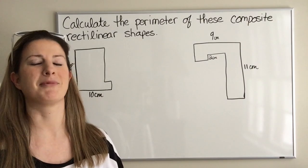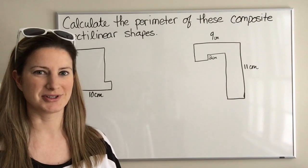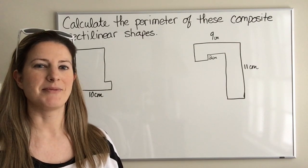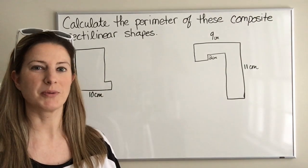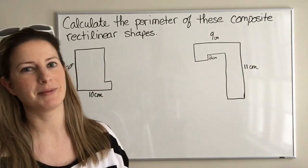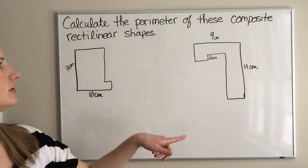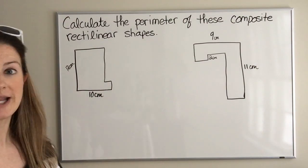So this is a math problem that went viral last June, June of 2016. It was floating around the internet and people were wondering how do you find the perimeter of these two composite rectilinear shapes.